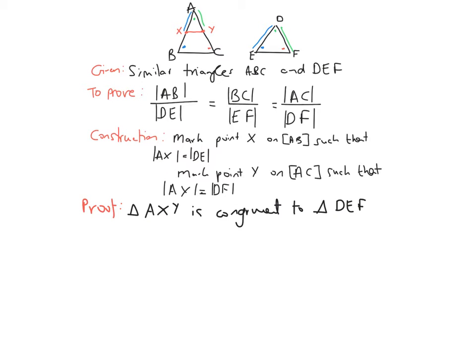So the first thing we're going to do in our proof is we're going to prove that the triangle AXY is congruent to DEF, and the way we can do that is we can look at the side, the angle, and the side. So for the side, we have already said from our construction that we know that the side AX is equals to DE.